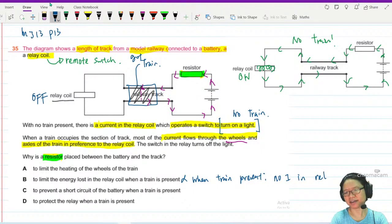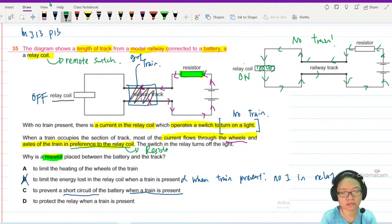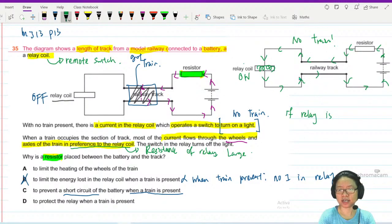Option C: to prevent a short circuit of the battery when a train is present. Here's the thing - if I know that the current totally doesn't want to go to the relay coil, this tells me that the relay coil has large resistance, very very big resistance. Current flows in preference to the relay coil. This sentence shows me the resistance of relay is very big. When given a choice, no current wants to go. Resistance of relay is large. This means if you remove the relay from the pathway of the current, the current will suddenly become very big. If relay is not part of the circuit,